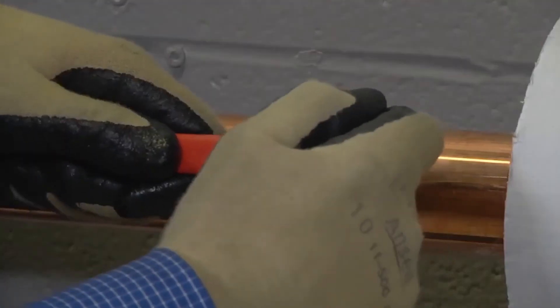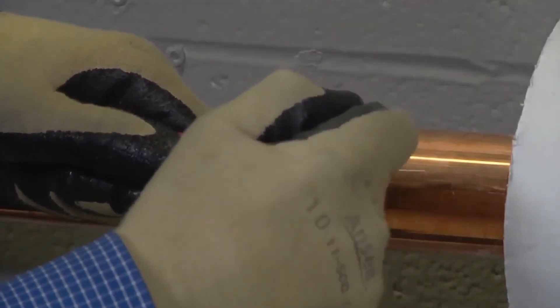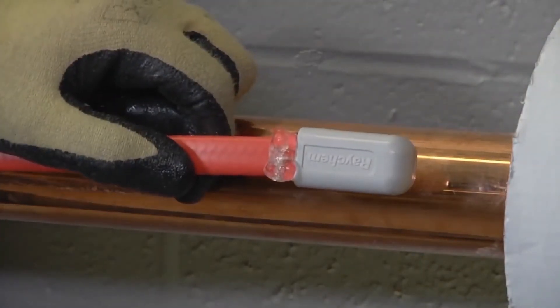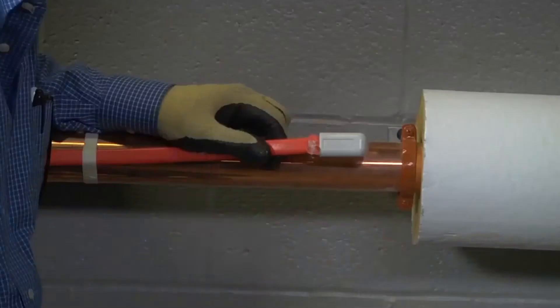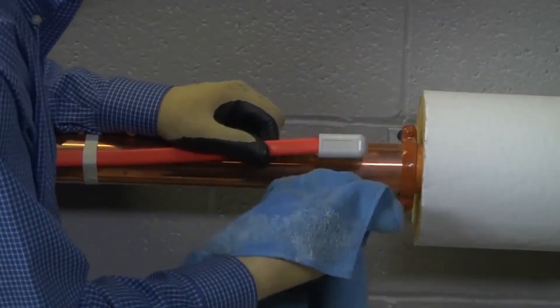And finally, push the RayClick E plain end seal into the prepared end of the heating cable. It is normal for some of the dielectric gel inside of the end seal to ooze out. Just wipe it down with a clean cloth or rag.